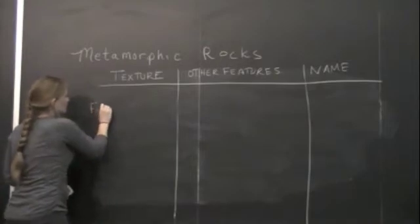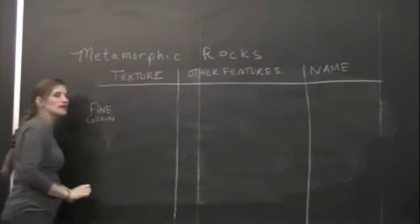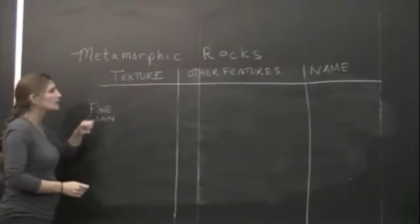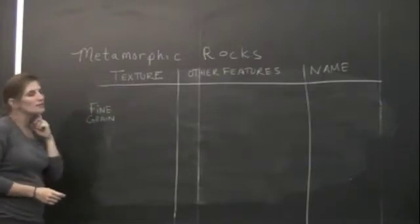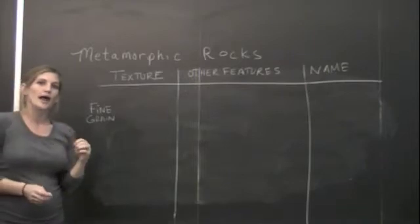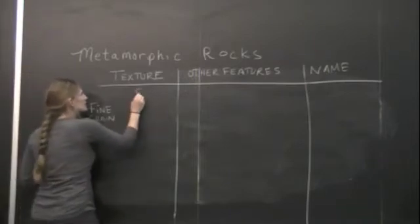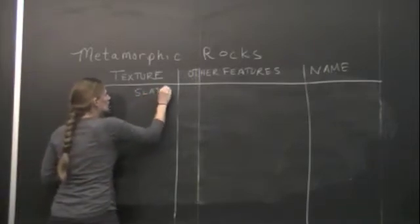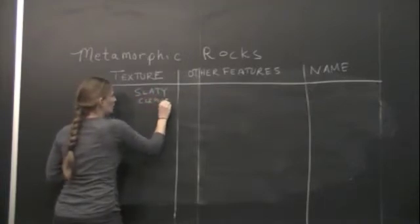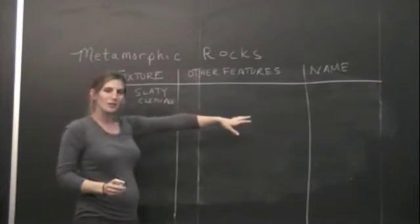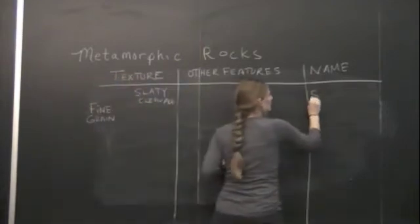When we start looking at foliated samples, we're first going to find fine-grained samples. And then we're going to compare them. If we find some that are very fine-grained and they have what's called a slaty cleavage, the sample that we're going to have is going to be called a slate.